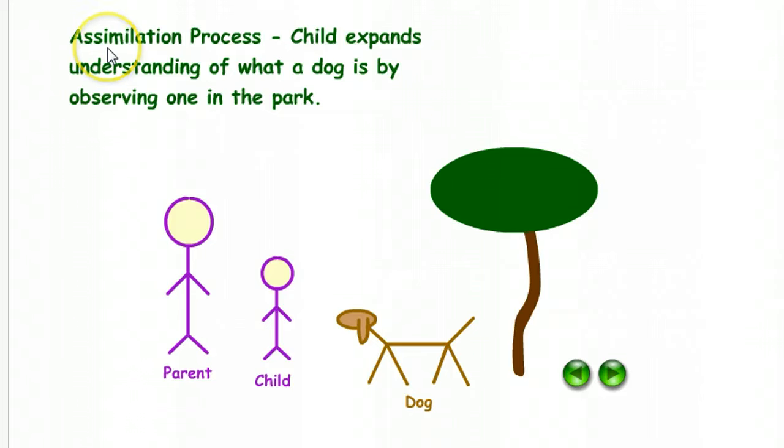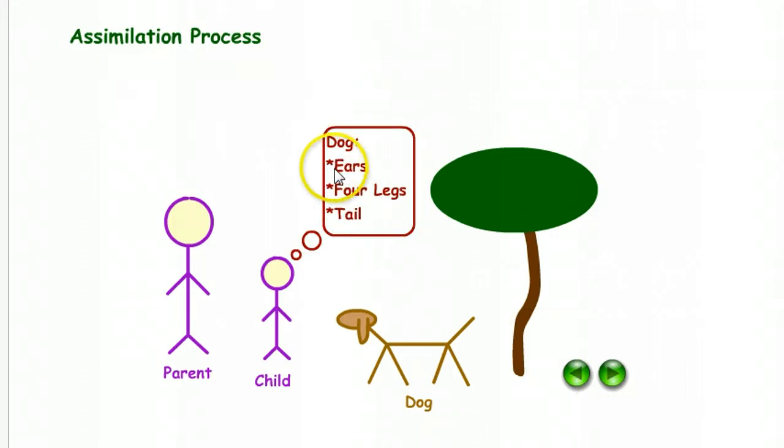The assimilation process continues. The child expands understanding of what a dog is by observing one at a park. The child checks: yes, the dog has ears, four legs, and a tail. This animal must be a dog.